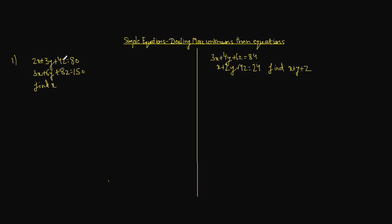Hello and welcome to this class on simple equations. Looking at your screen, you will find two pairs of equations. In both cases, the number of equations is 2 while the number of unknowns — x, y, and z — is 3. In the first case you are required to find the value of x, and in the second case you have to find the value of x plus y plus z.